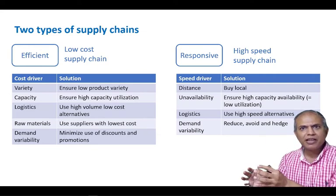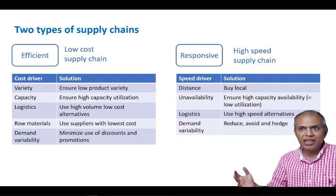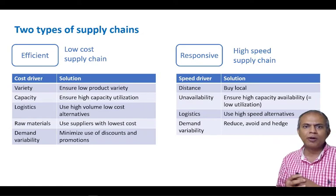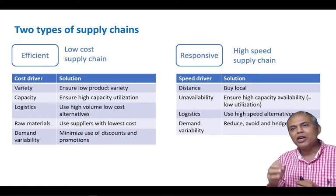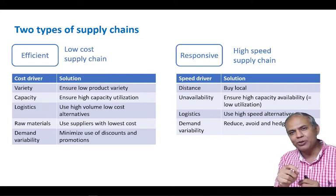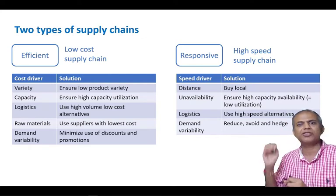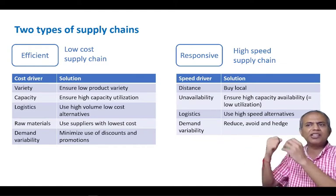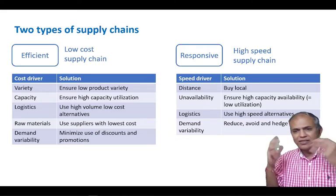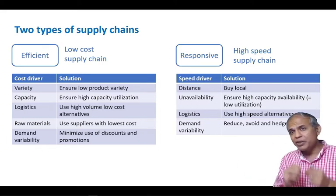Responsive supply chains are completely different. We do offer variability but try to manage it. We buy as much as possible from close around us. We do not focus on capacity utilization — higher capacity utilization would increase lead time. So we try to be as fast as possible and ensure capacity is available to serve customers. In logistics, it's okay to increase cost and use high-cost but high-speed alternatives.